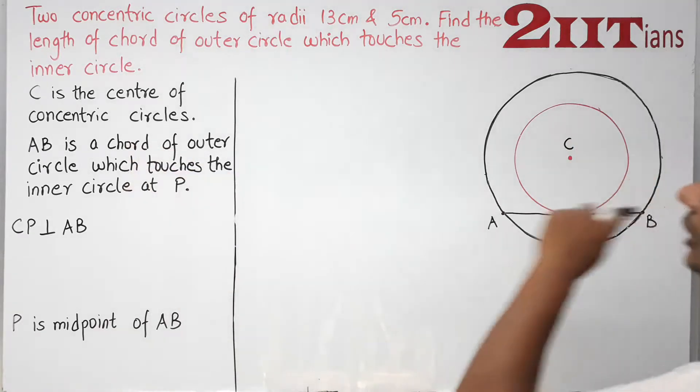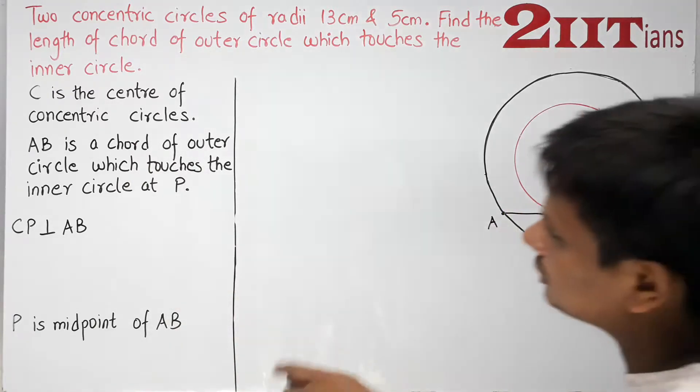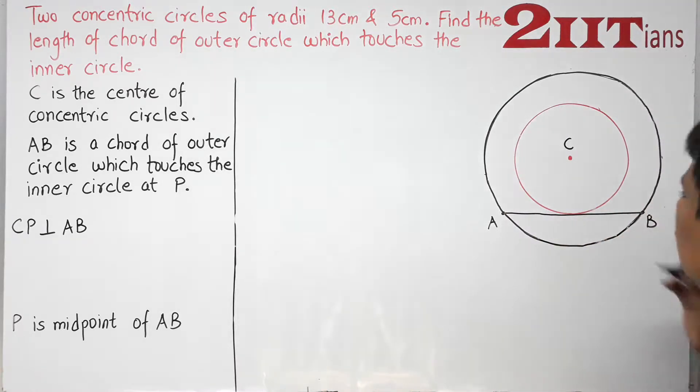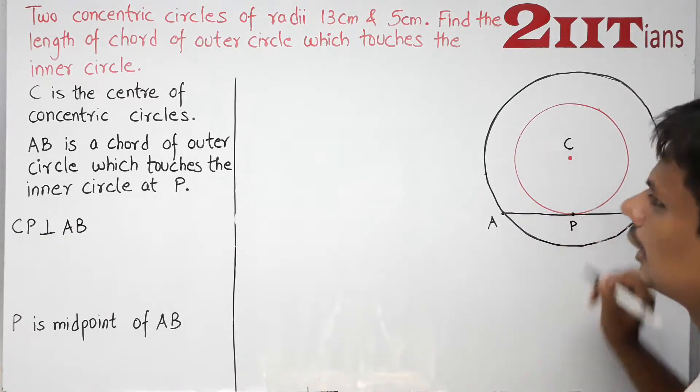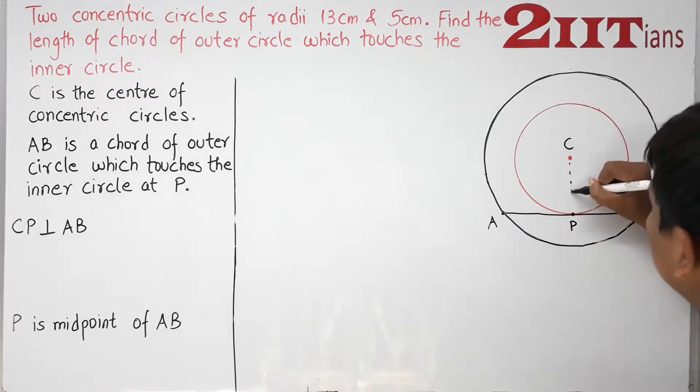C is the center of the concentric circles. AB is a chord of outer circle which touches the inner circle at P.